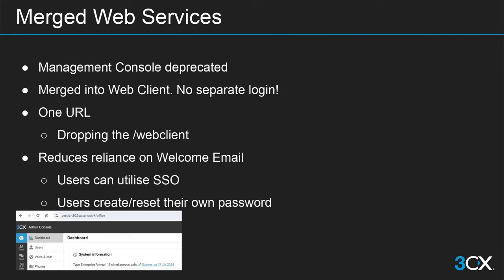In version 20, we have reduced the reliance on the welcome email. When a user is created, they receive the welcome email, but it no longer contains static information — no username and password, no QR code, no configuration file for older apps. All they have is a link to create their own password. If a user forgets their password and clicks forgot password, they will receive the welcome email again with a link to reset it. Users can also utilize single sign-on via Microsoft or Google if configured.